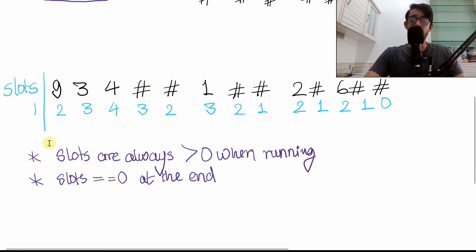Now, one or actually two more conditions based on these slots, which we want to keep in mind. Slots are always greater than zero when you're running the program. You don't want to encounter a zero in middle, say here,